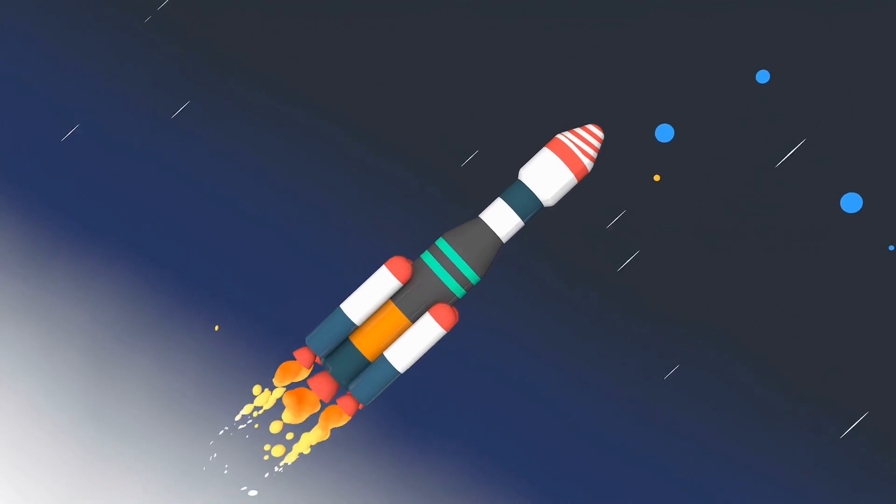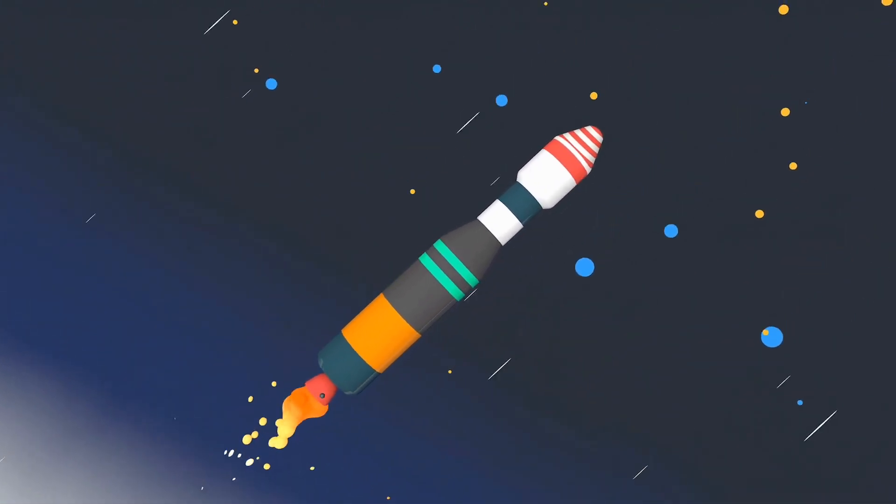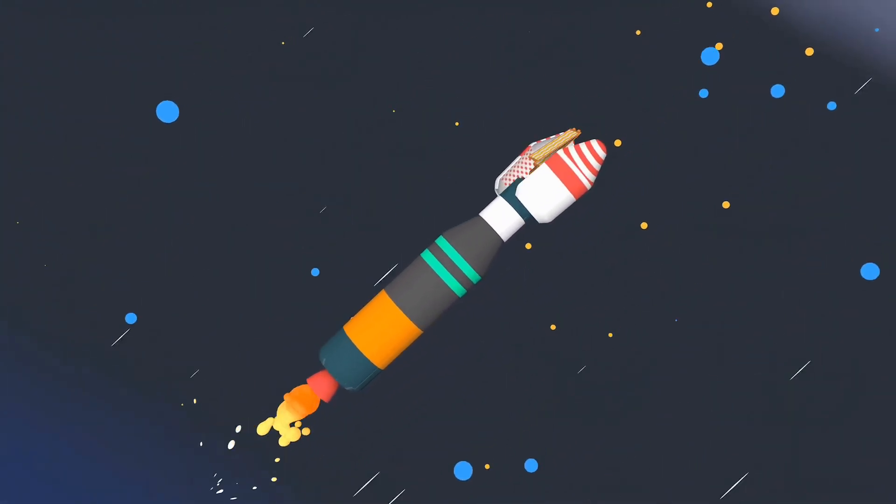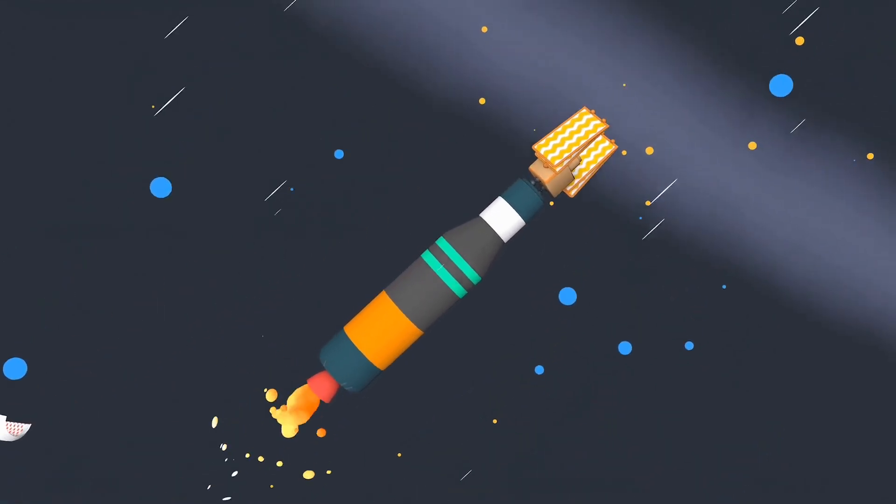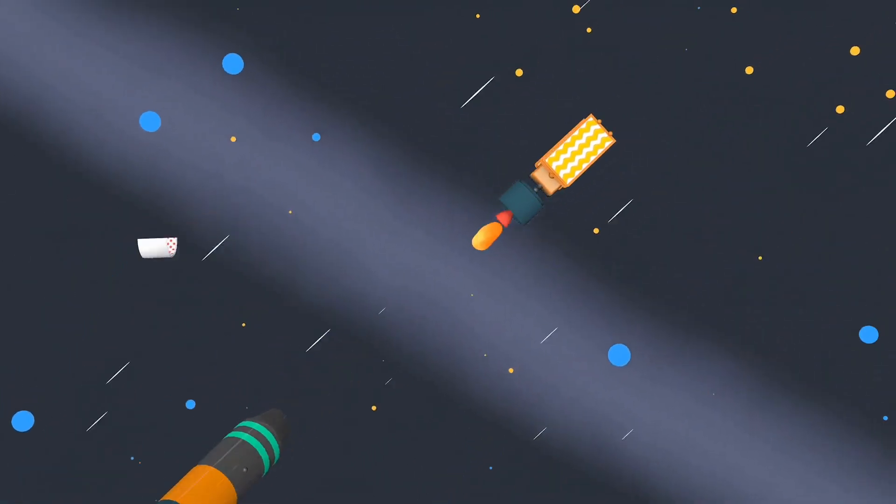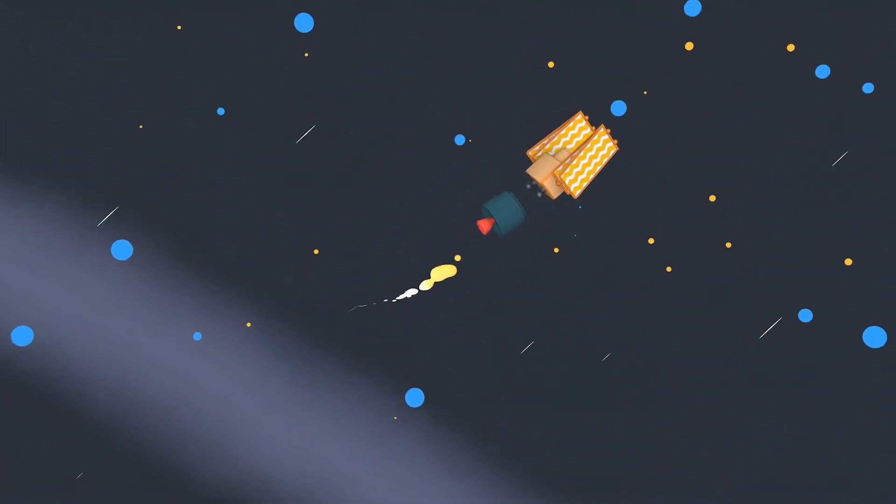7. Payload Deployment. Once the desired altitude or orbit is reached, the rocket's payload is deployed. This can be a satellite, spacecraft, or other scientific instruments.